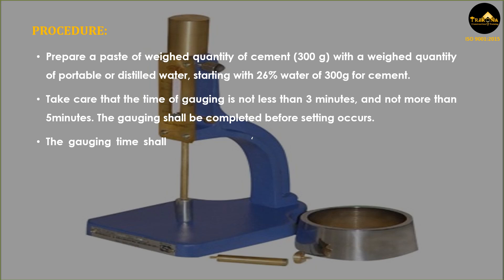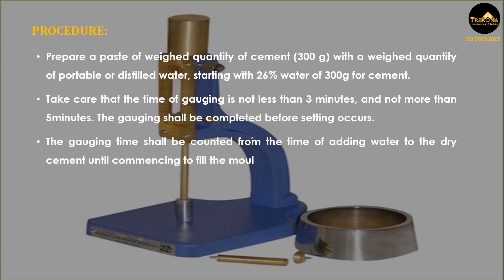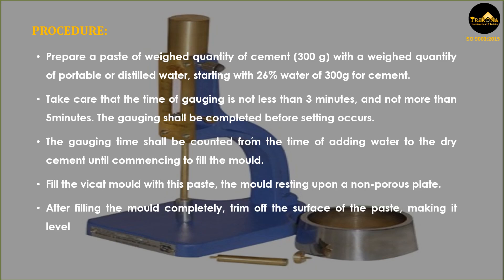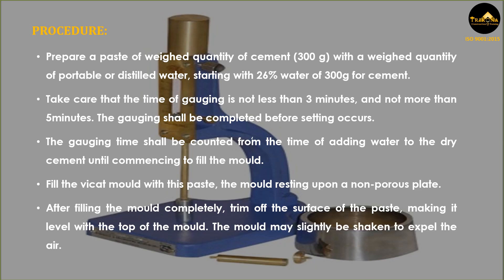The gauging time shall be counted from the time of adding water to the dry cement until commencing to fill the mold. Fill the Vicat mold with this paste, the mold resting upon a non-porous plate. After filling the mold completely, trim off the surface of the paste making it level with the top of the mold. The mold may slightly be shaken to expel the air.